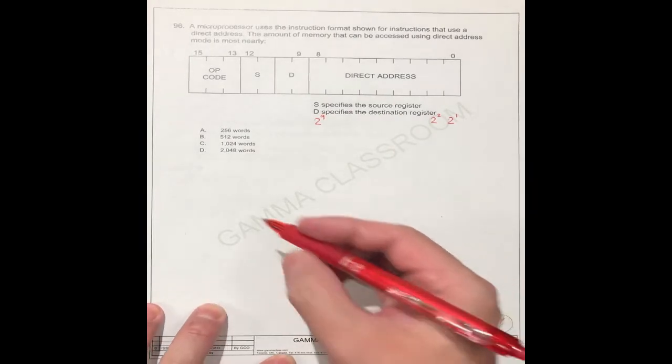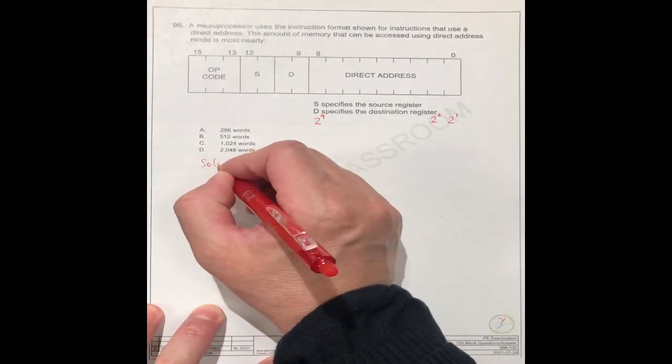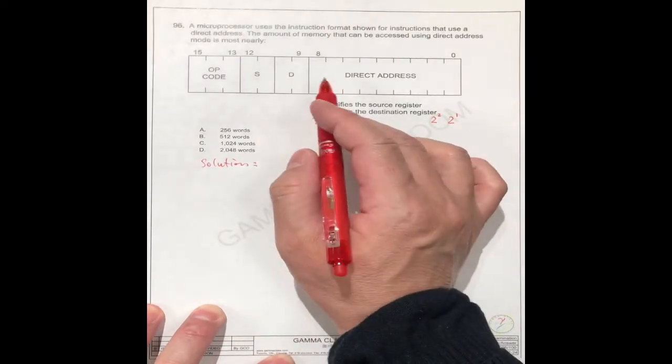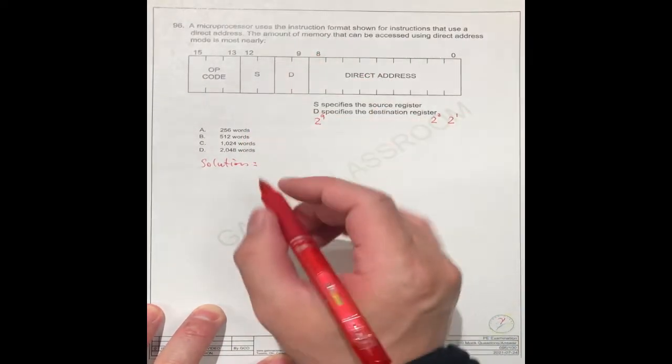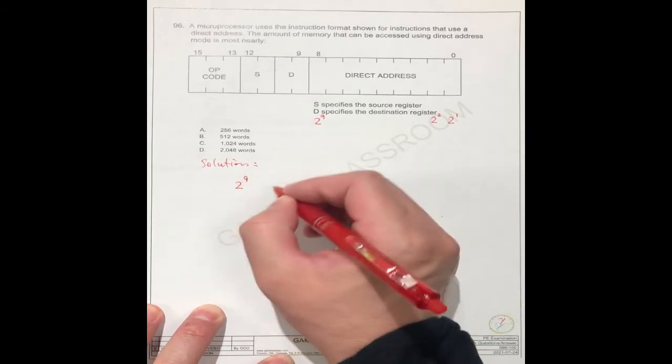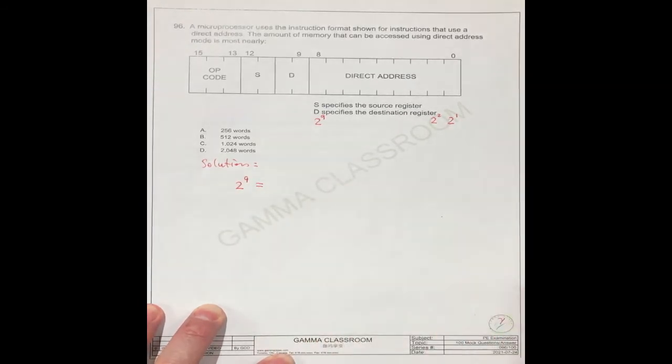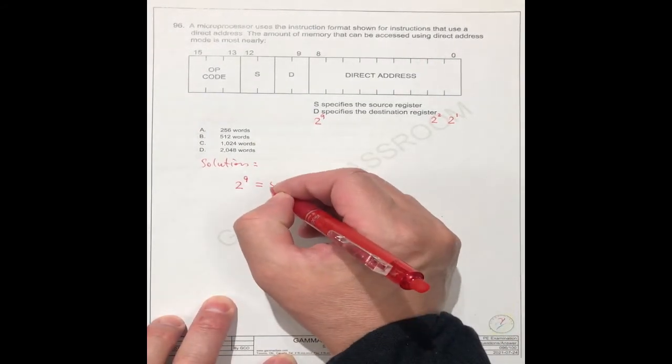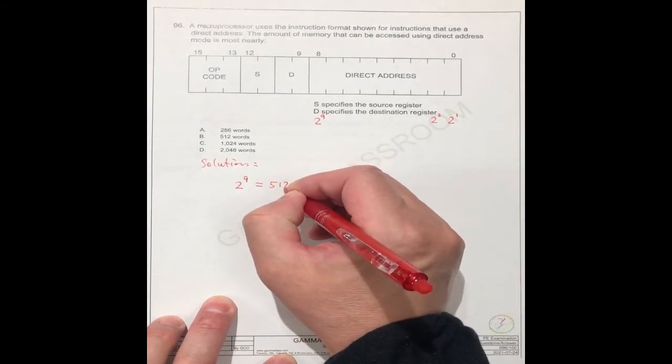So we can get the answer. The total amount should be two power nine. Equal how much? It should be equal to 512 words.